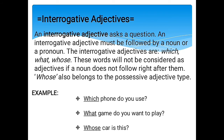The next type is interrogative adjectives. Interrogative adjectives ask a question and must be followed by a noun or a pronoun. The interrogative adjectives are which, what, and whose. These words will not be considered adjectives if a noun does not follow right after them. Whose also belongs to possessive adjectives. For example: 'Which phone do you use?' 'What game do you want to play?' 'Whose car is this?'